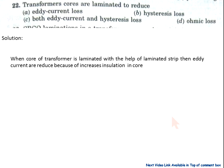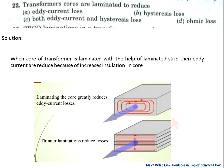Question number 22: Transformer cores are laminated to reduce — A) eddy current losses, B) resistive losses, C) both eddy current and hysteresis losses, D) ohmic losses. Solution: when the core of the transformer is laminated with the help of laminated strips, eddy current losses are reduced. This is the core of the transformer — if not laminated, eddy currents flow in large loops causing large stray losses.